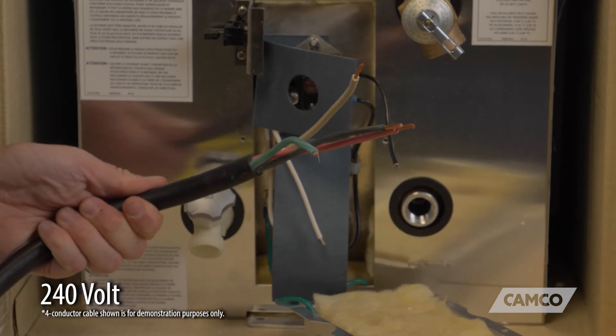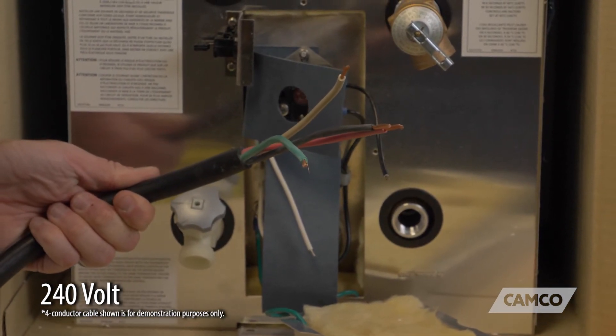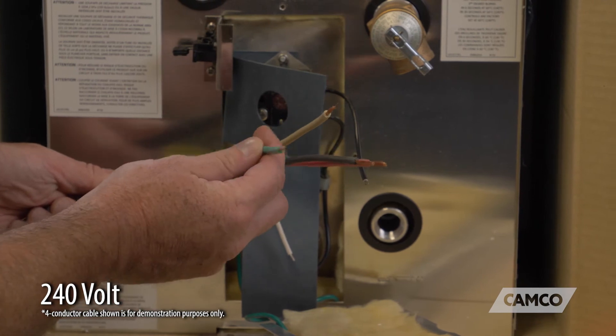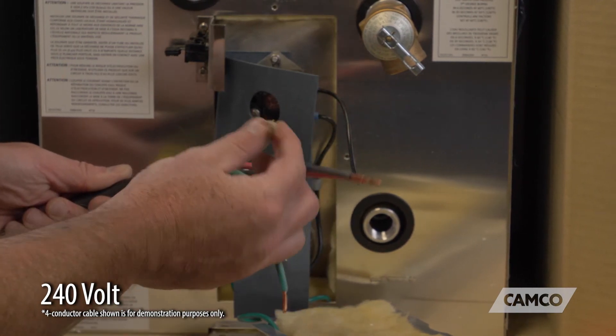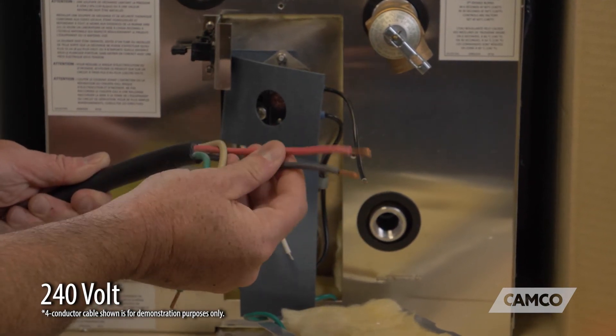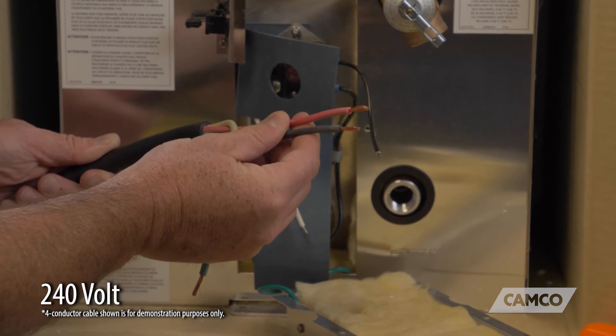This is typically what the wire is going to look like coming into your water heater from your boat. It's a four conductor cable. We're going to have green for ground, we're going to have white for neutral, and we're going to have two hots, a red and a black typically.